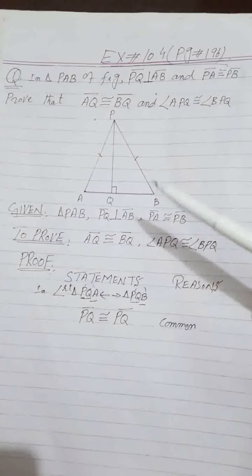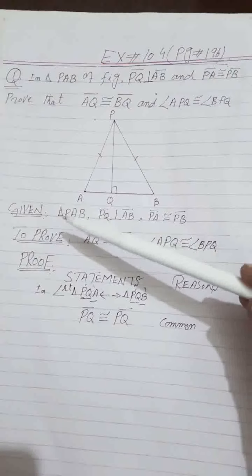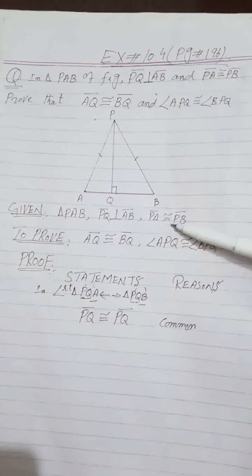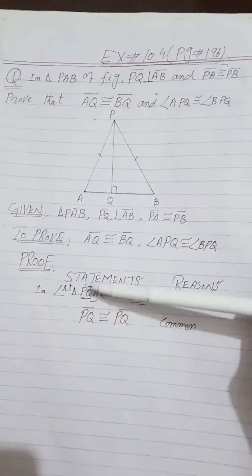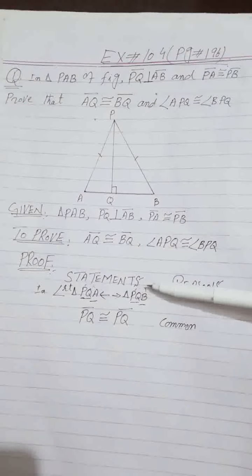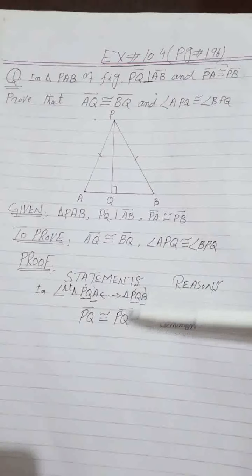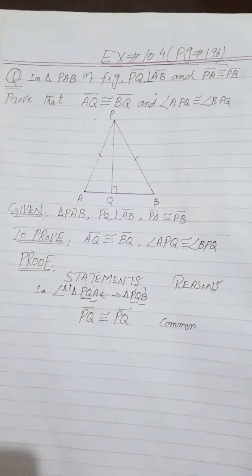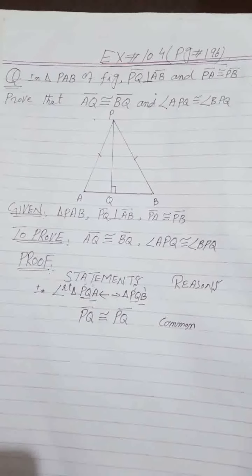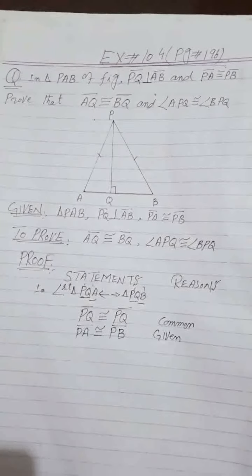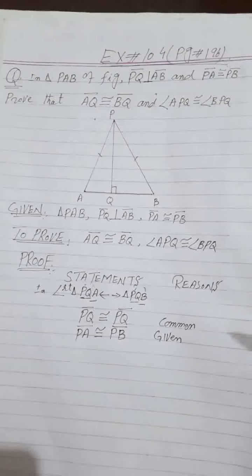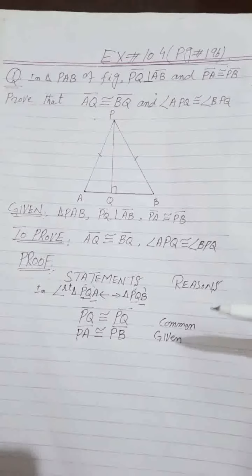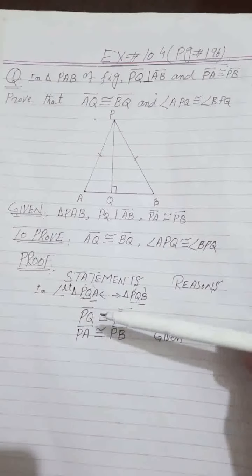Now I will write down the statement. For the right angle triangles, we look at the angles. In triangle PQA, angle PQA is 90 degrees. In triangle PQB, angle PQB is also 90 degrees. These two angles are equal, so our postulate will be complete.